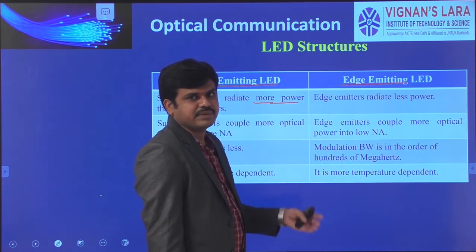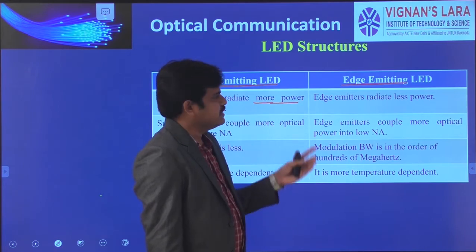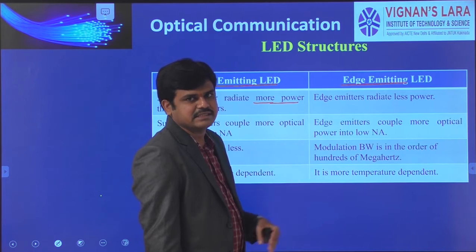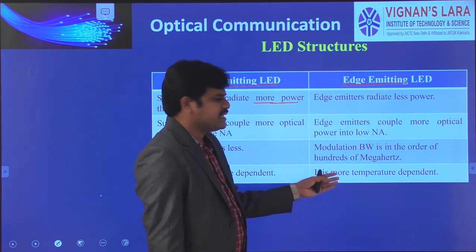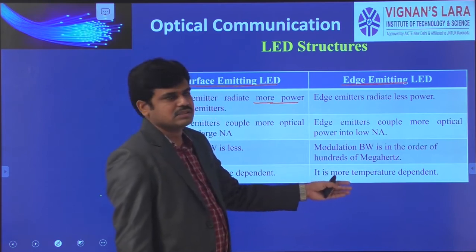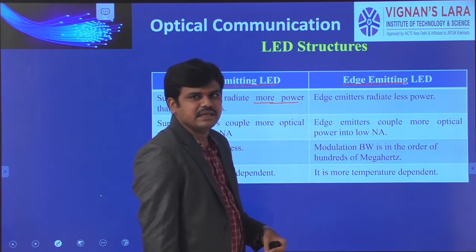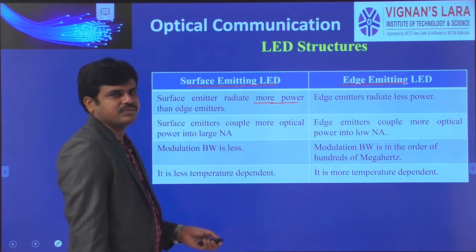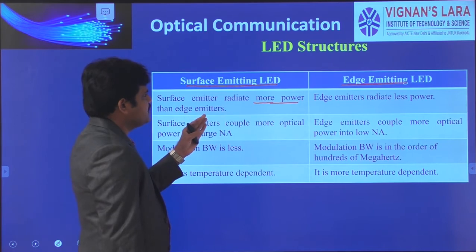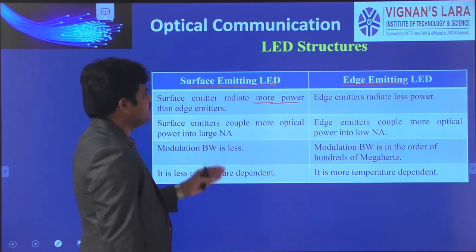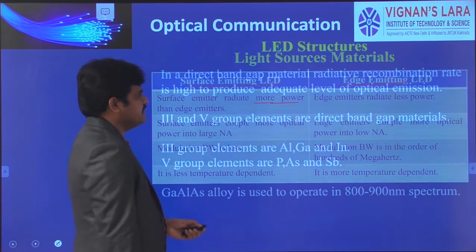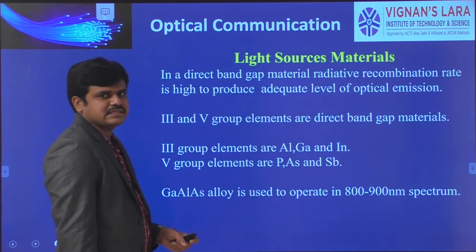The inside temperature of the structure of the edge emitting LEDs should be controlled by the heat sink, because the radiation depends upon temperature in case of edge emitting LEDs, whereas surface emitting LEDs are less temperature dependent. These are the main differences between surface emitting LEDs and edge emitting LEDs.